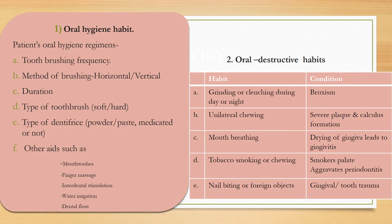Oral hygiene habits to be noted include: tooth brushing frequency, method of brushing — horizontal brushing results in cervical abrasion — duration, and type of toothbrush. Soft brushes are recommended after flap surgery; medium brushes for routine patients. The type of dentifrice should be noted, as powder has more abrasive agent and higher chance of sensitivity. Other aids such as mouthwashes, finger massage, dental stimulators, water irrigation, and dental floss should also be noted.